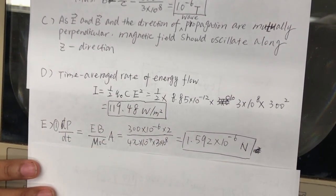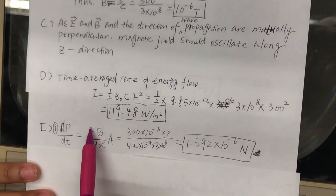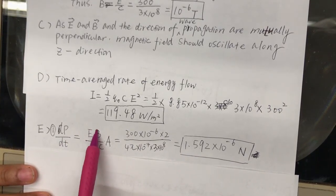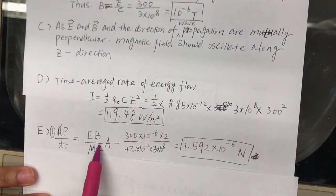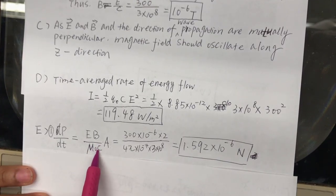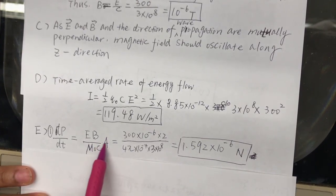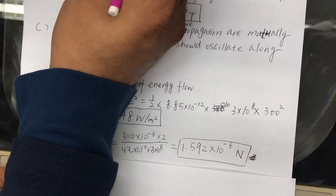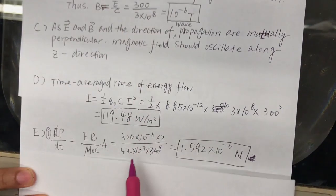This equation, again, is in, all of this is chapter 32, is equal to the electric field times the magnetic field, divided by mu naught speed of light, times the area which we're given in the E. Plug and chug.